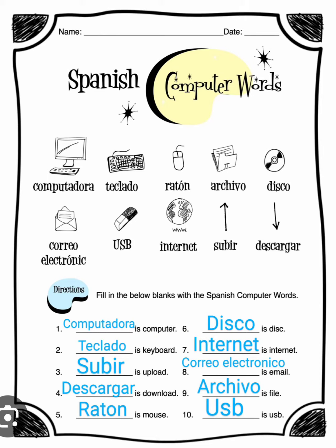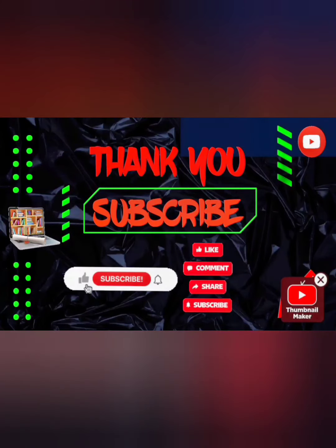Number eight: correo electrónico is email. Number nine: archivo is file. Number ten: USB is USB. Review — computadora: computer, teclado: keyboard, subir: upload, descargar: download, ratón: mouse, disco: disc, internet: internet, correo electrónico: email, archivo: file, and USB: USB.